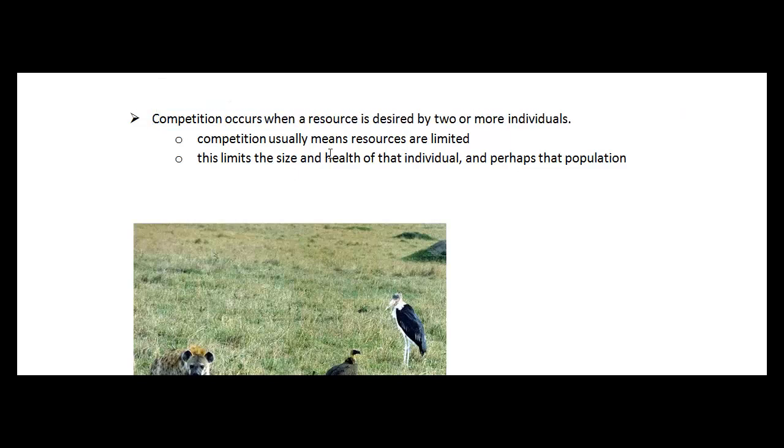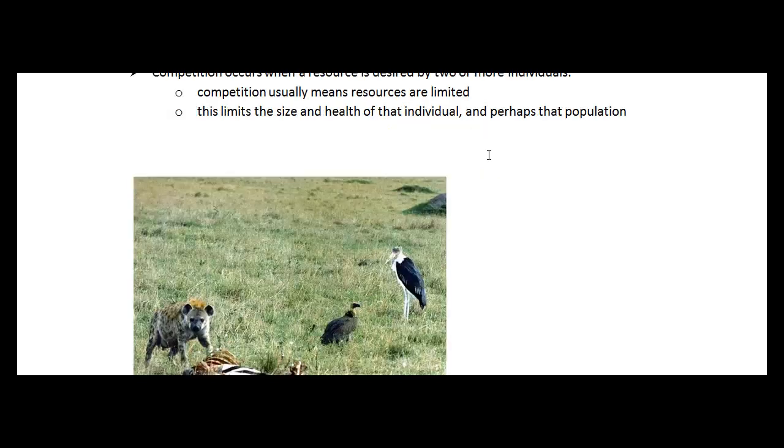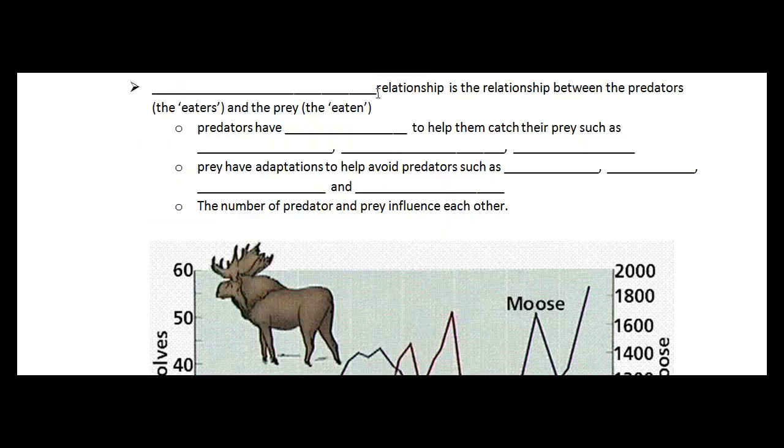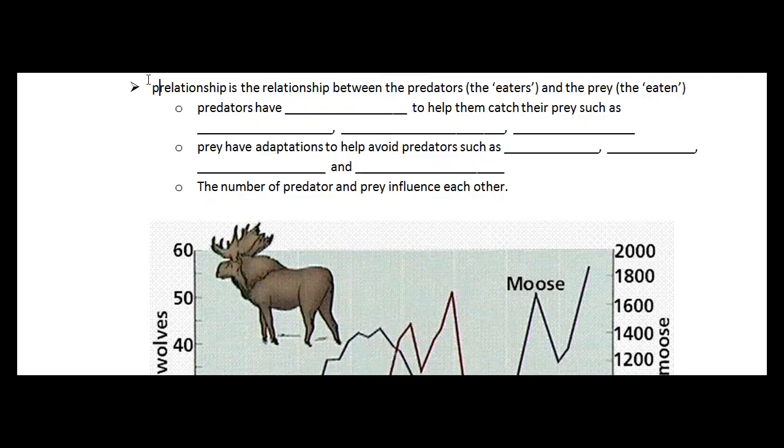Competition occurs when a resource is desired by two or more individuals. So it usually means resources are limited, so different animals will be fighting over that resource. And it also limits the size and health of the individual and possibly that population. So this picture here you see there's some food and we have three different individuals who are competing for that food source.